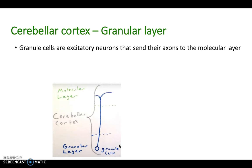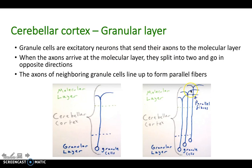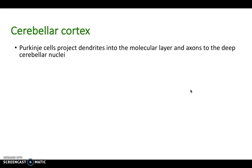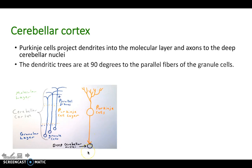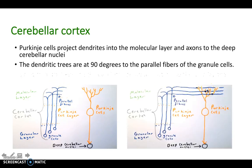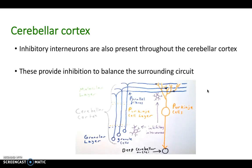Granule cells are excitatory neurons that send their axons to the molecular layer. The axon ascends into the molecular layer and splits into two, going in opposite directions. The actions of neighboring granule cells line up, forming parallel fibers which run in the molecular layer at 90 degrees to the granule cell axon. Purkinje cells project dendrites into the molecular layer and axons to the deep cerebellar nuclei. The dendritic trees are at 90 degrees to the parallel fibers, and they can run across and form several synapses with the Purkinje cell dendrites. Inhibitory interneurons are also present throughout the cerebellar cortex, providing inhibition to balance the surrounding circuit.